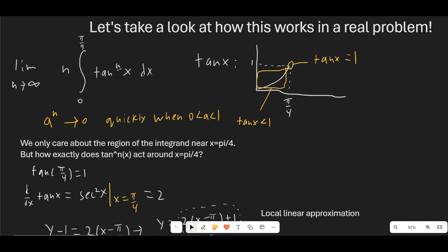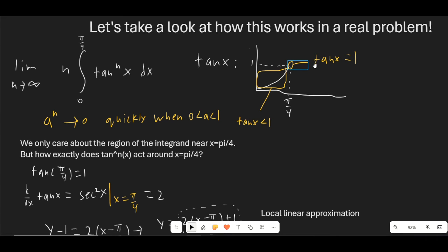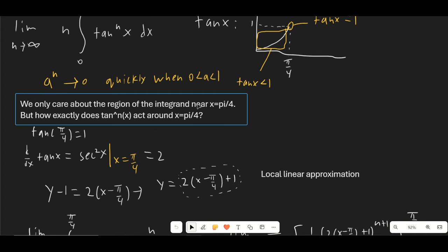Really the only part that's going to contribute to the value of the integral is the point where tan(x) equals 1. We can make assumptions that only hold very close to this point, and they will still allow us to recover the value of the integral because the contribution from everywhere else is 0. For example, we could start integrating from π/8 to π/4, and this integral would have the exact same value, because in the region from 0 to π/8, tan(x) is so small that when raised to the n-th power it disappears completely — even multiplying by n gives a result of 0.